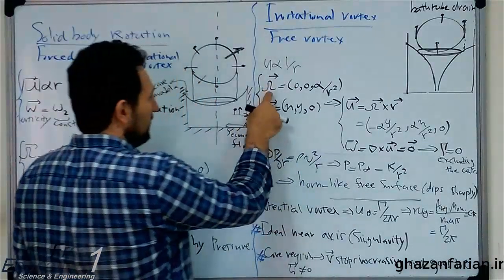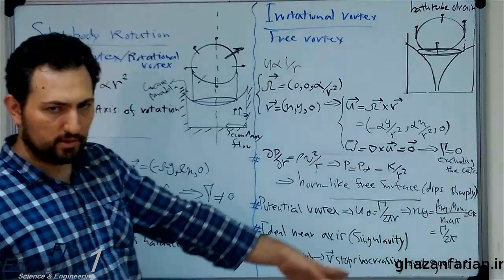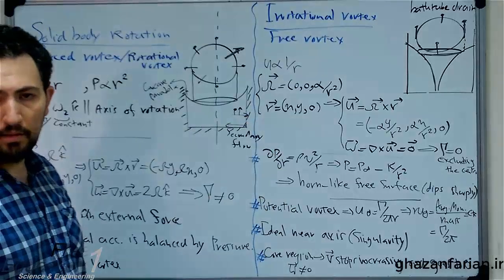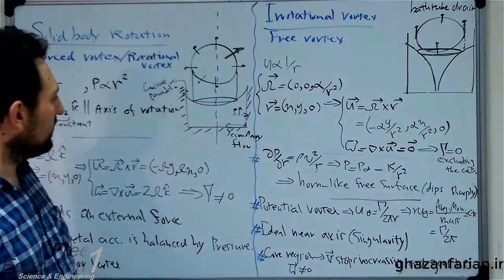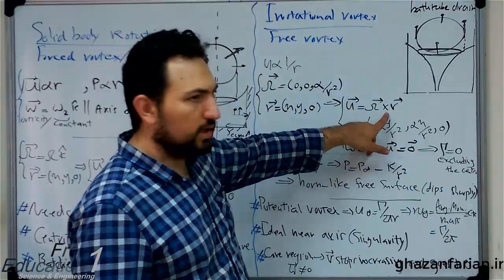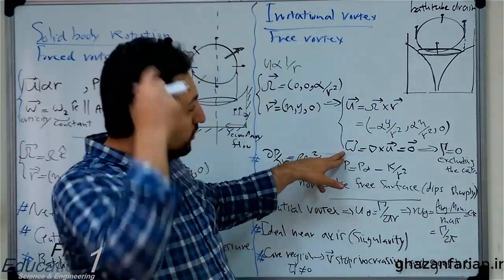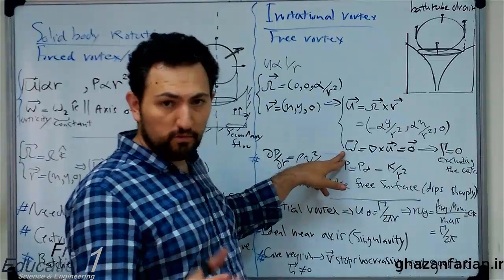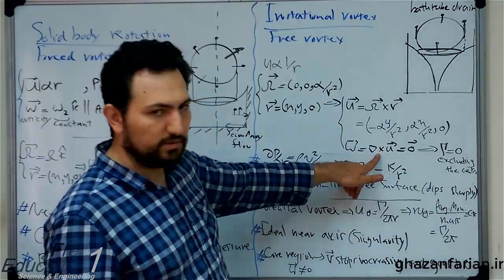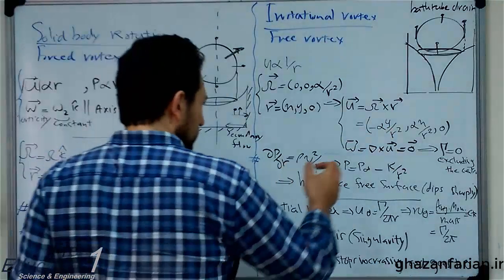Here we have angular velocity, which can be computed to be zero in the z-direction only. Alpha is a constant divided by the second power of the distance from the centerline. This is the position vector, similar to the previous case. Perform the cross product to compute the velocity field. This is the velocity field of a free vortex, and to compute the vorticity vector and investigate the rotationality of the flow field, you compute the cross product of the del operator and the velocity vector — and it is obtained that the vorticity vector is zero.